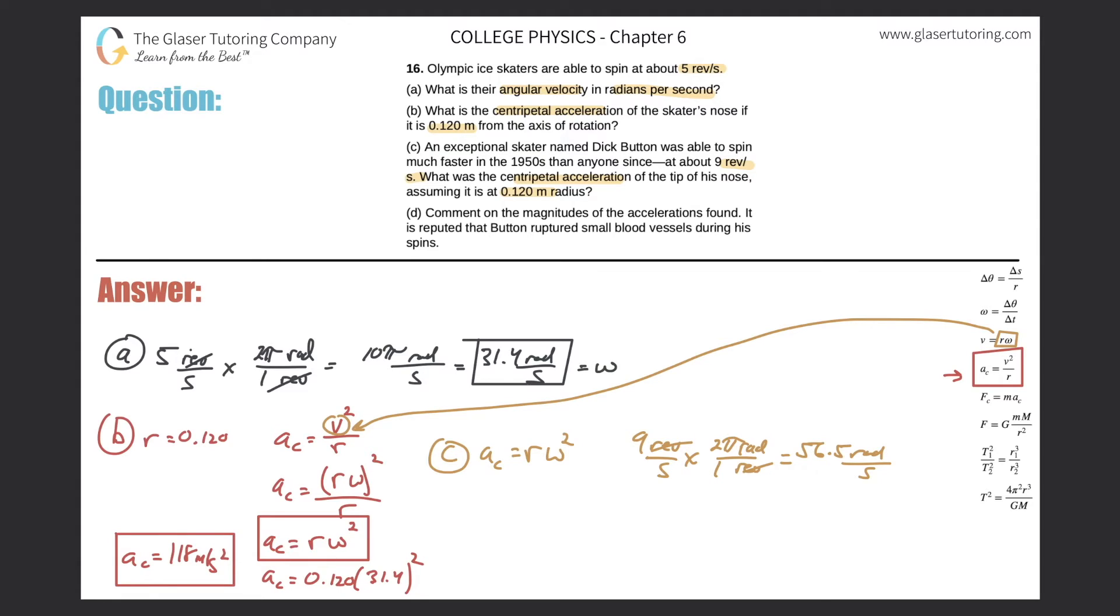So this is the omega value for Dick Button. Now let's plug it in. So we have the radius was the same, 0.120, and now I'm going to do 56.5, and square that. And now let's see what it is. So this is 56.5 squared times 0.12. 383 meters per second squared. That is his centripetal acceleration.